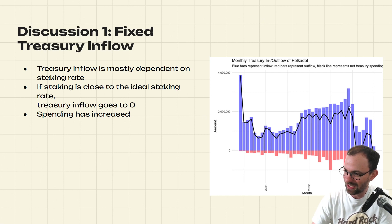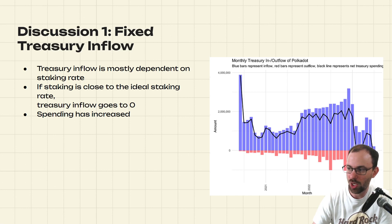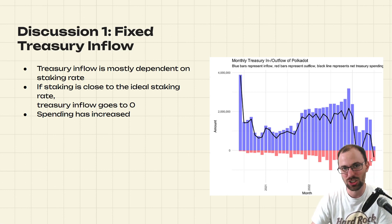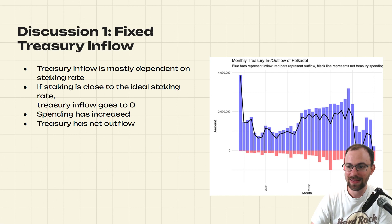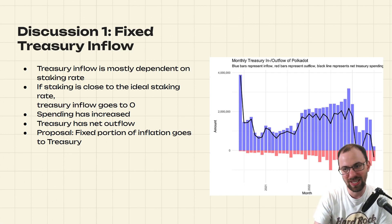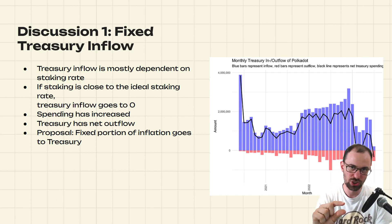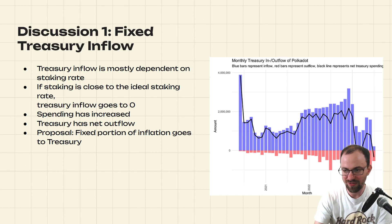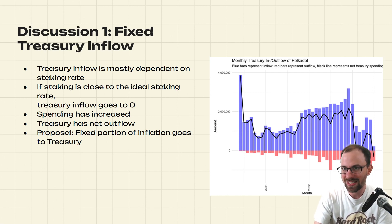There is a certain inflow, but it seems to have dropped recently while the outflow of the treasury is increasing. The net sum of inflow and outflow shows periods of net outflow from the treasury — this is why this discussion is being started. There is now a proposal on Polkadot Forum that instead of being dependent on the ideal staking rate, there should be a fixed portion of inflation that automatically goes to the Treasury. The current proposal is 2% of inflation, though I contributed suggesting it should be lower, around 0.5%.